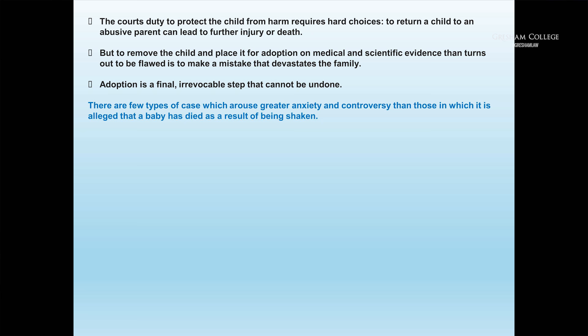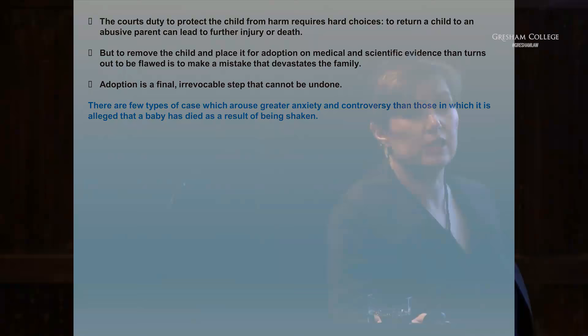Just a reminder: in the cases I deal with, we're talking about the court's duty to protect the child from harm, which requires hard choices. To return a child to an abusive parent wrongly can lead to further injury or death. But to remove a child and place it for adoption on medical and scientific evidence that is flawed or turns out to be incorrect is an irrevocable decision — once a child is placed for adoption, that decision is finite. One of the key differences between crime and care: there is no jury in a family courtroom. The judge alone determines all the facts, and the weight of responsibility is immense.